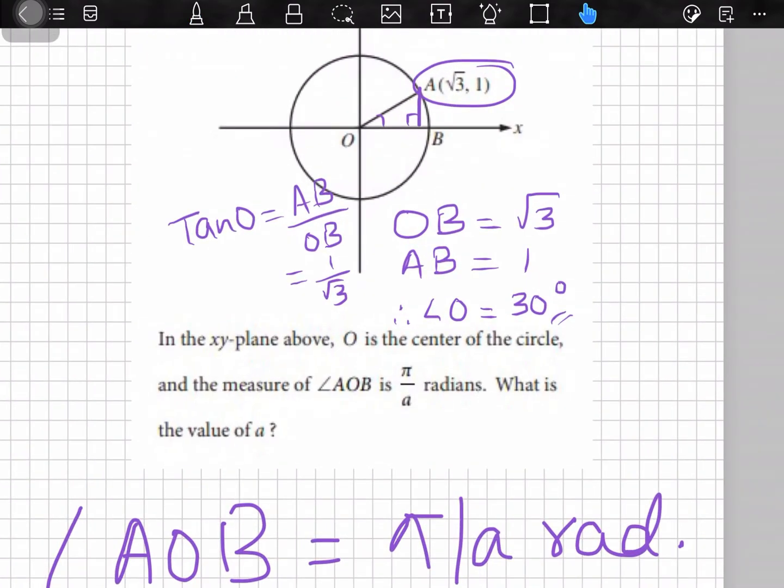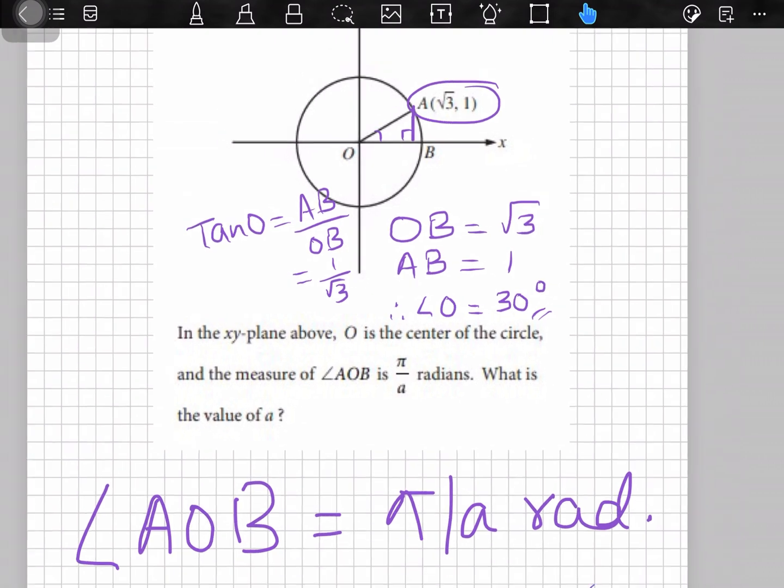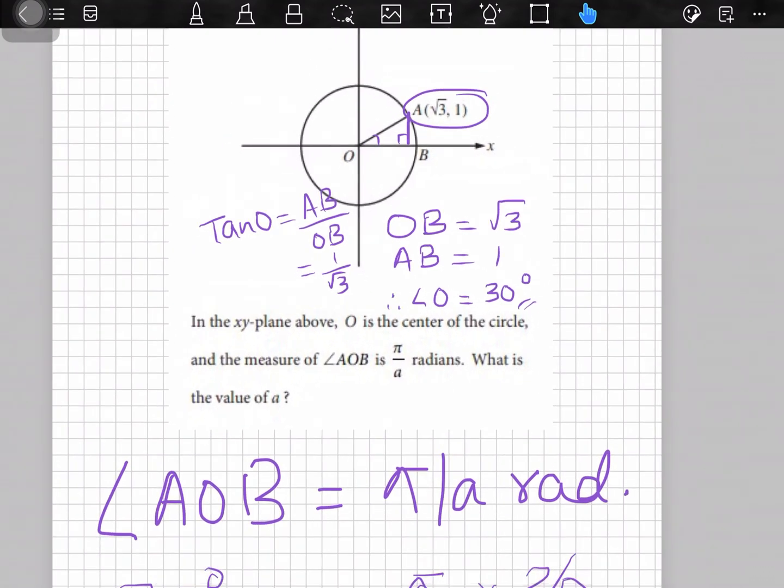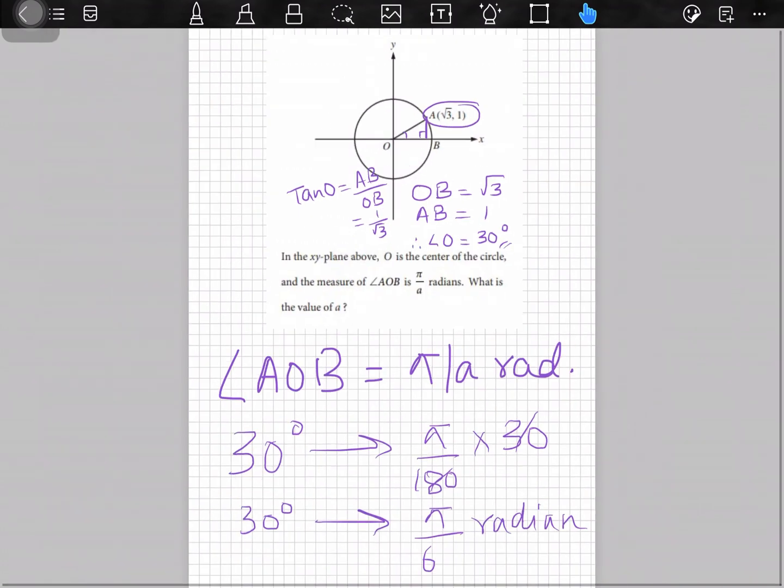I just drew a line and then OB is equal to root 3 that's given. AB is equal to 1 that's again given. And then I just used tan, formula of tan. Similarly I got the answer. So I hope you learned how to do this and hope to see you in my next videos. Thank you.